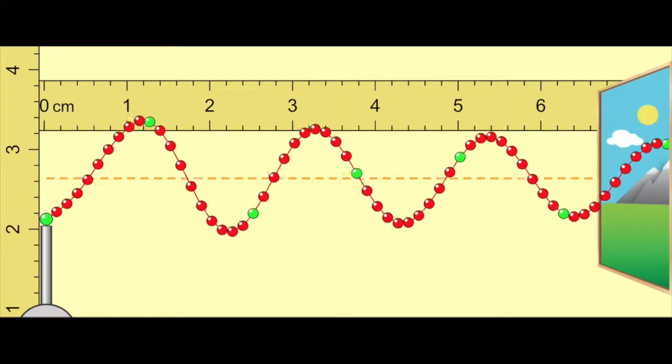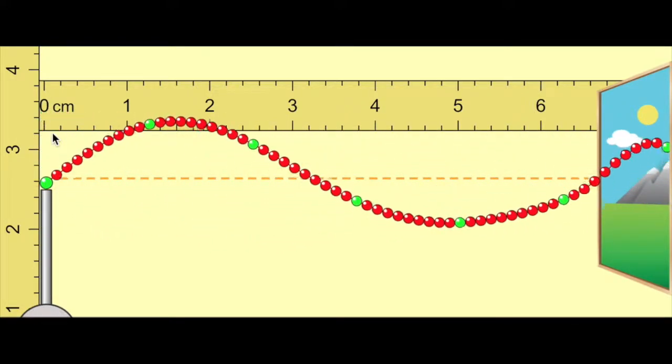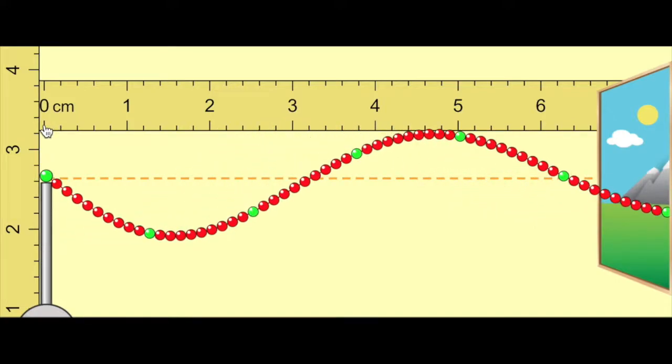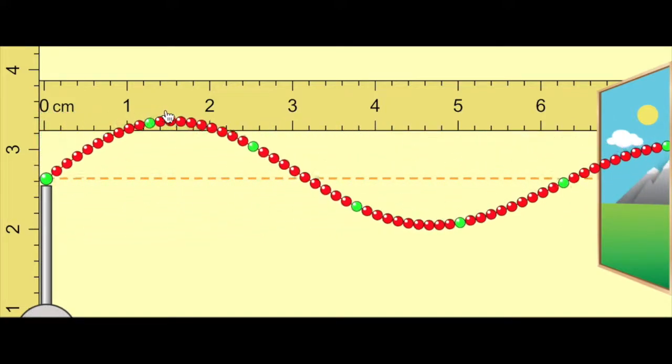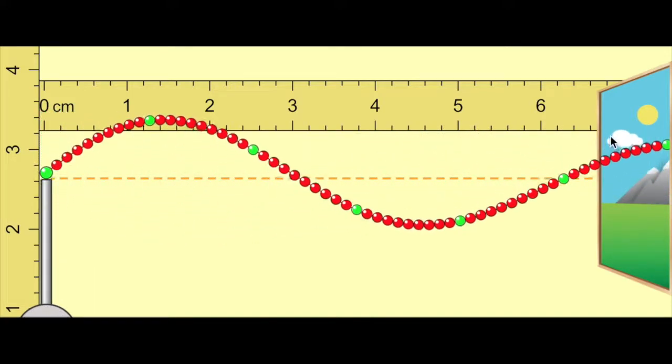Now I'll reduce the frequency by one third. The cycles are happening one third as often. Now let's measure the speed. One one thousand, two one thousand, three one thousand, four one thousand. About four seconds.